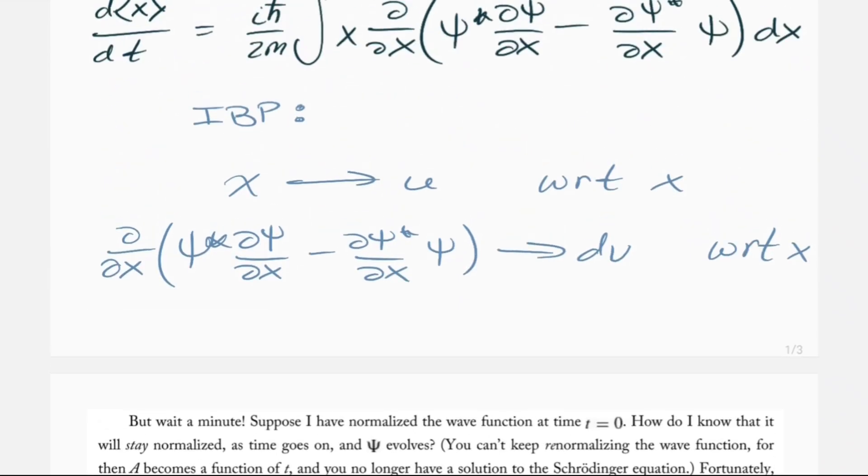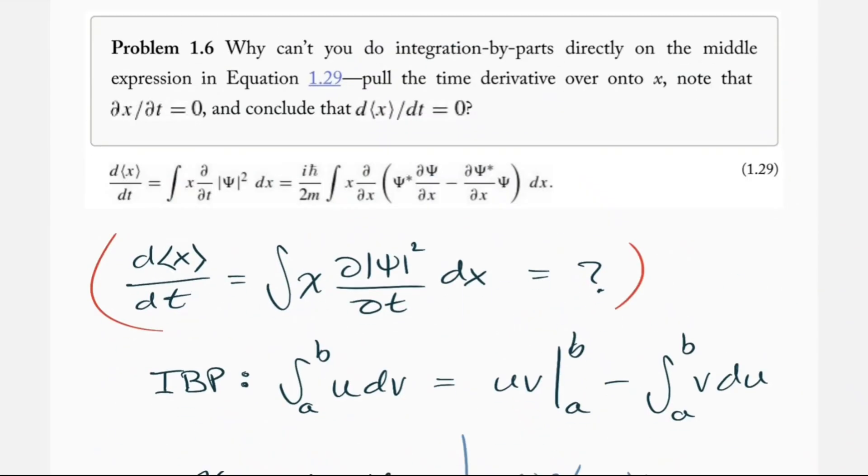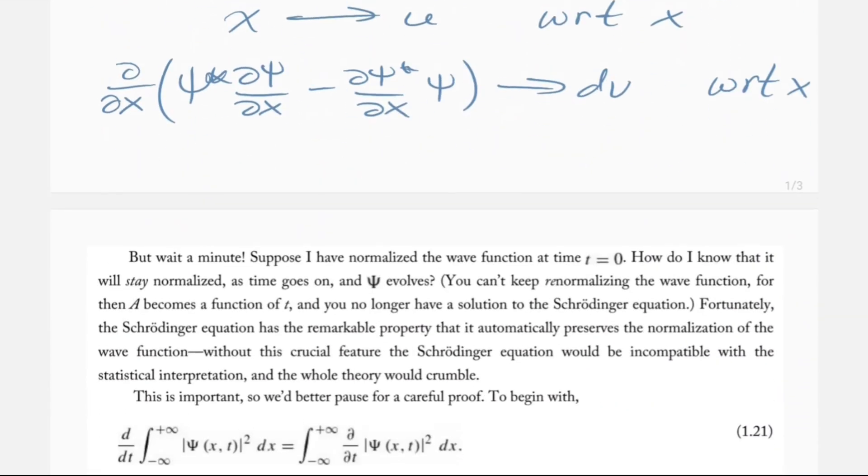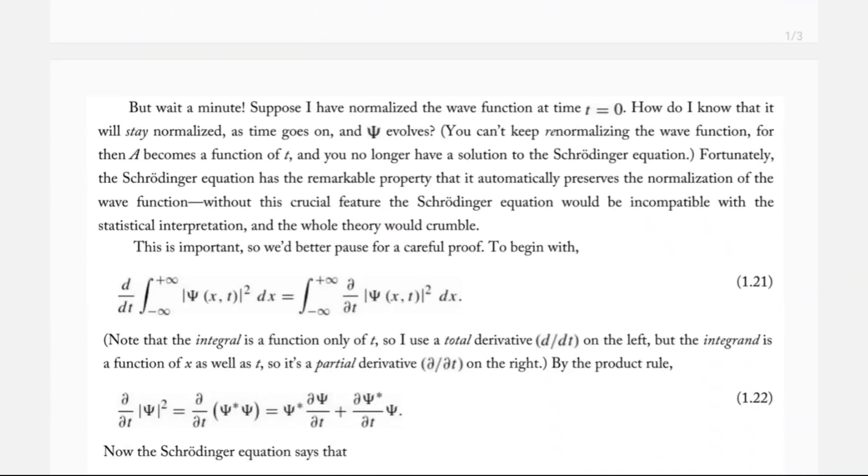Now, if that's all you needed to know for this problem, then that's it, you're done, you can move on. But just some more context for this problem. Here's directly from the textbook. The author asks, we have a wave function that we've normalized, how do we know that it's going to stay normalized?